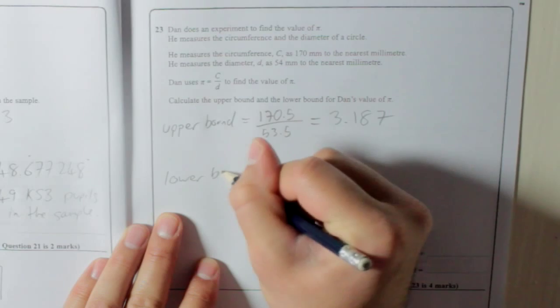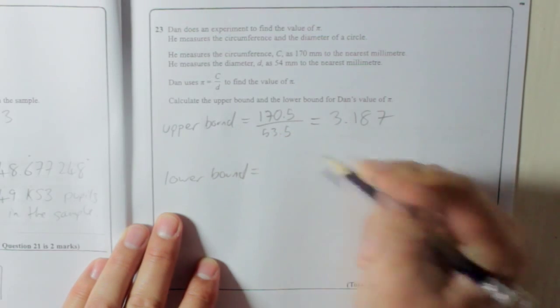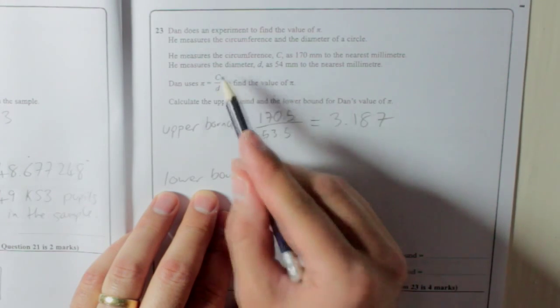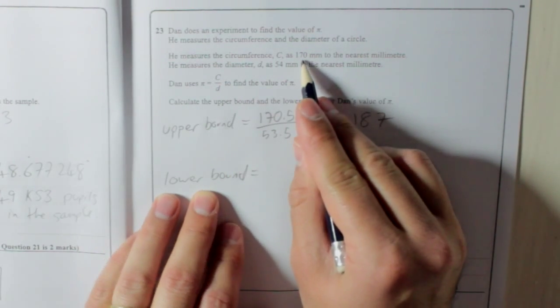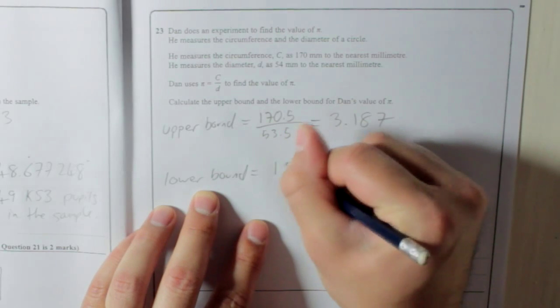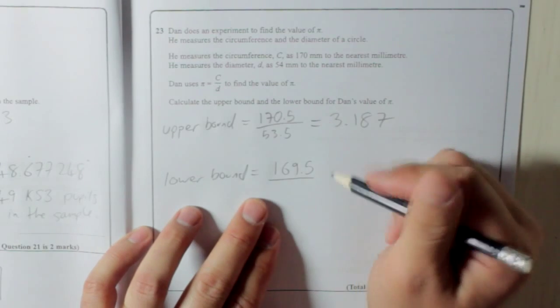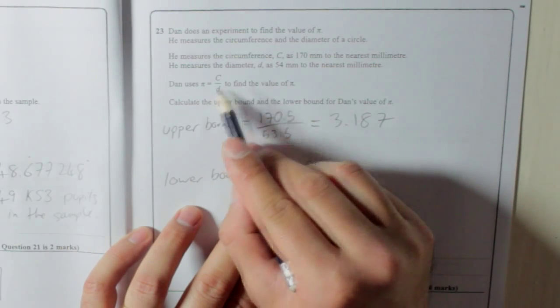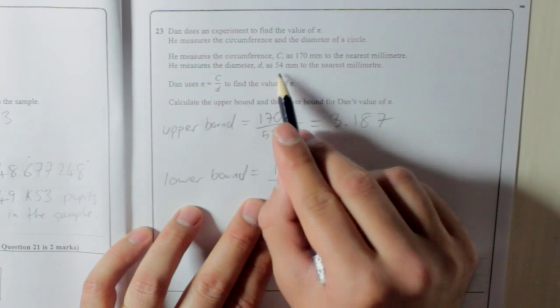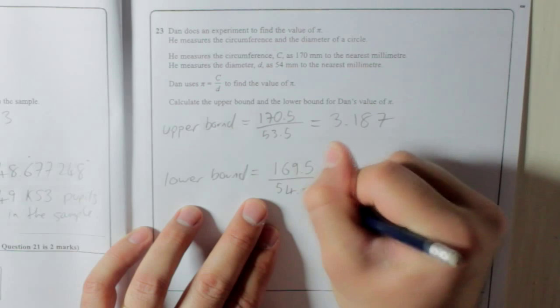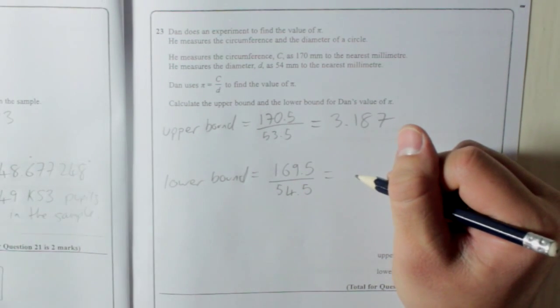Lower bound, so we want the lowest possible. That's going to be found by making the number on top as small as possible, so 170, the smallest it could have been was 169.5, and divide it by a number that's as big as we can get it, so divide by D. Diameter was 54 to the nearest millimeter, so the biggest it could have been 54.5. And that gives us 169.5 divided by 54.5.